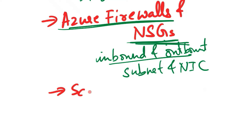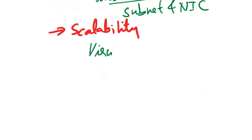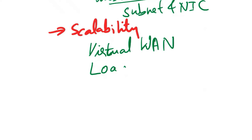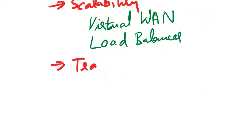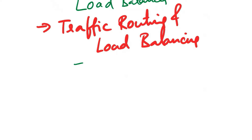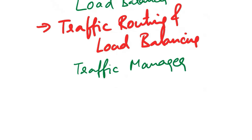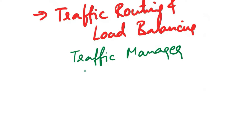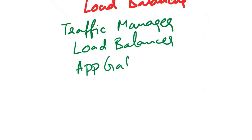The next consideration is scalability. Use Azure Virtual WAN for large-scale global connectivity. Leverage Azure Load Balancer for distributing incoming network traffic across multiple servers to ensure scalability and high availability. For traffic routing and load balancing, implement Azure Traffic Manager for global load balancing across multiple Azure regions. Use Azure Load Balancer for distributing traffic within a region, and utilize Azure Application Gateway for application-level routing and load balancing.